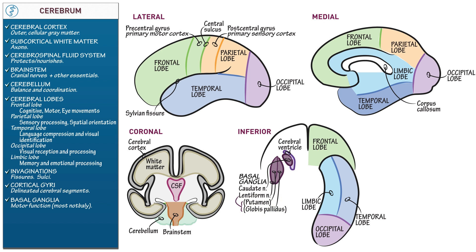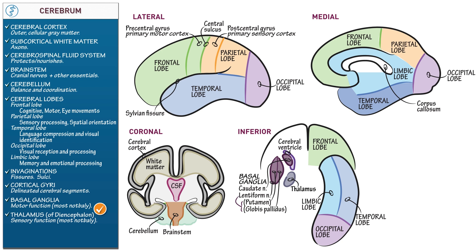Imagine a putaminal shell around a globus pallidus core. Medial to the lentiform nucleus, draw the thalamus of the diencephalon, which is the primary sensory relay center that relays sensory information throughout the cerebrum — and more broadly, motor, cognitive, and other functions as well. Label the space between the lentiform nucleus, caudate head, and thalamus as the internal capsule, which comprises tightly packed fiber bundles originating from widespread brain regions. The motor function of the internal capsule is the most clinically relevant — a stroke within the internal capsule causes a pure motor stroke. As an oversimplification, think of the thalamus for sensory input and the internal capsule for motor output.